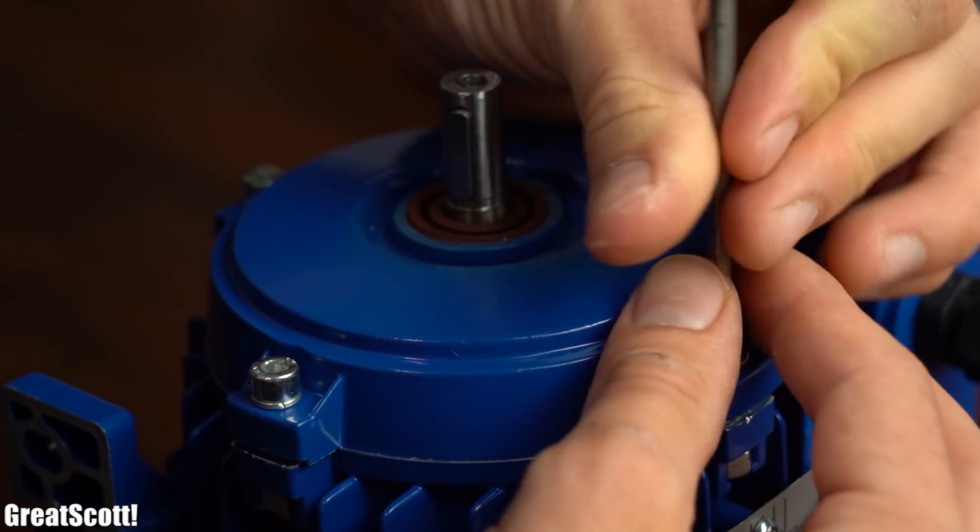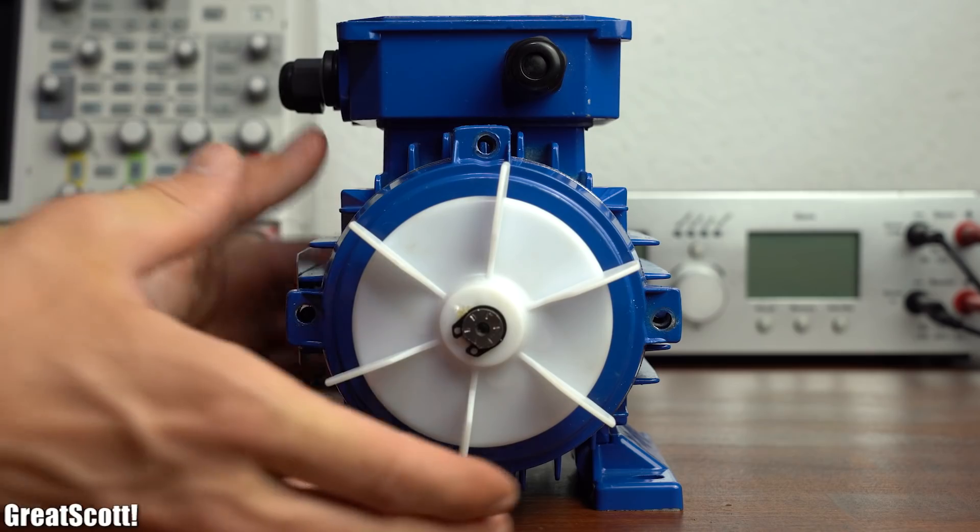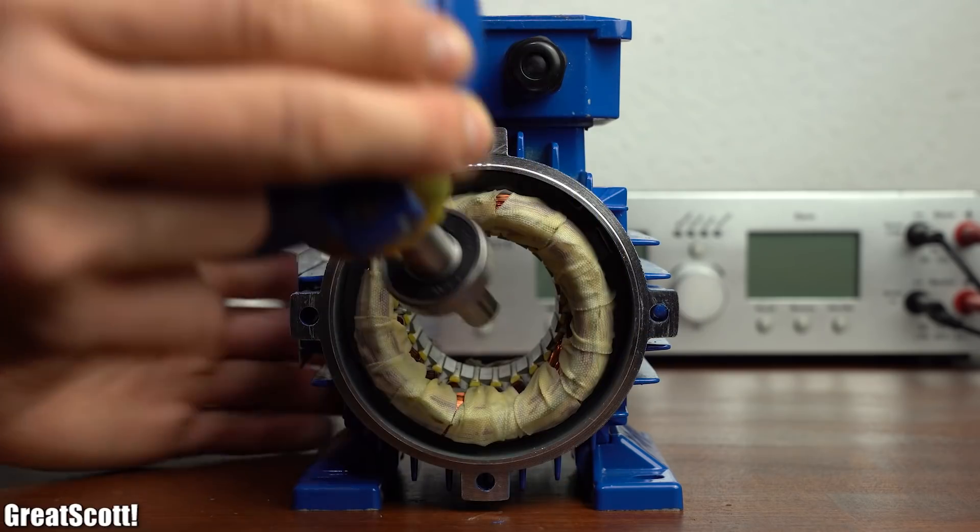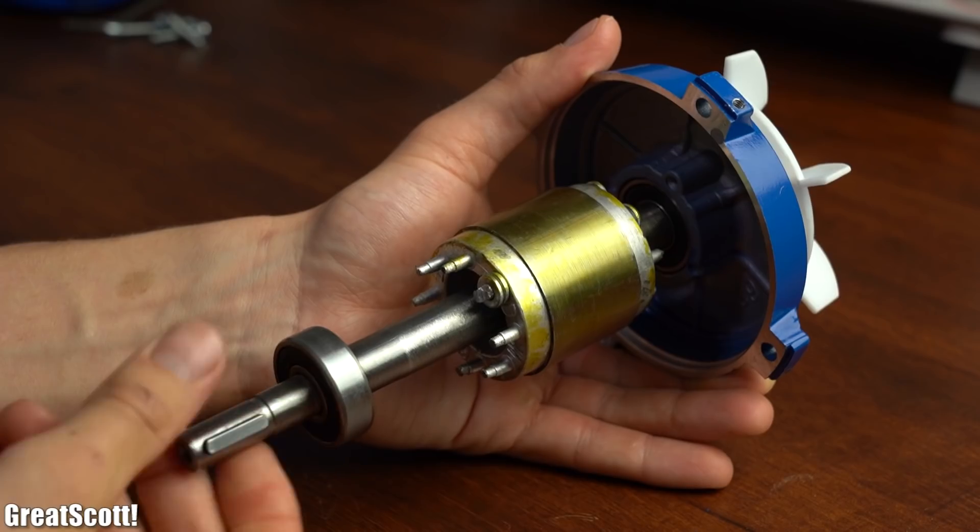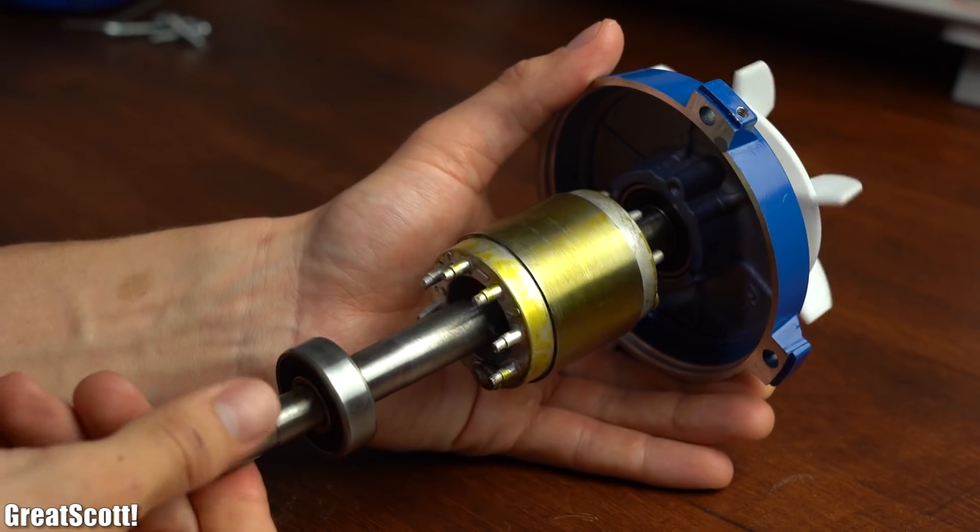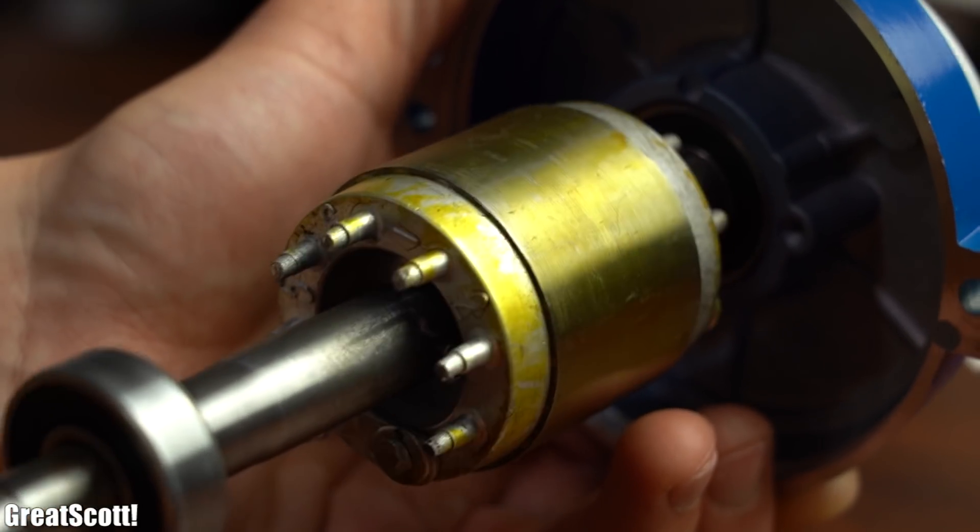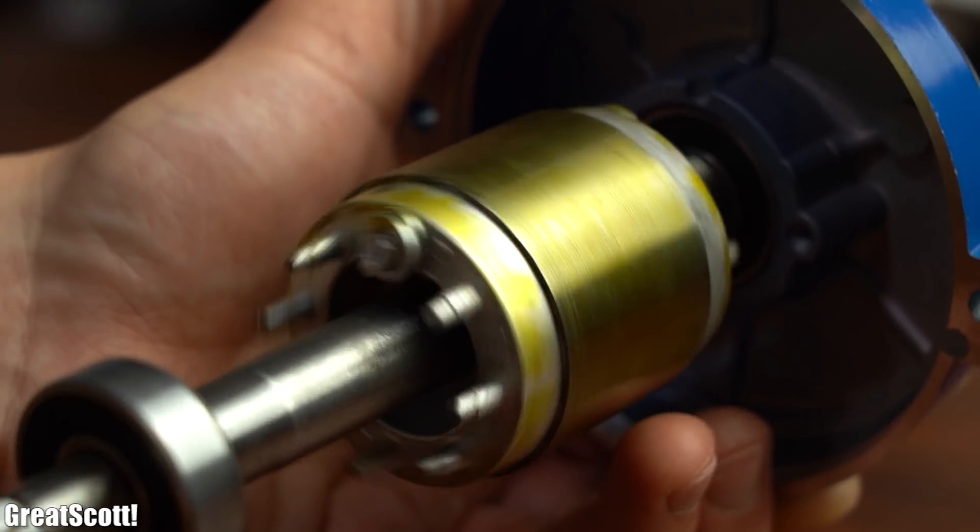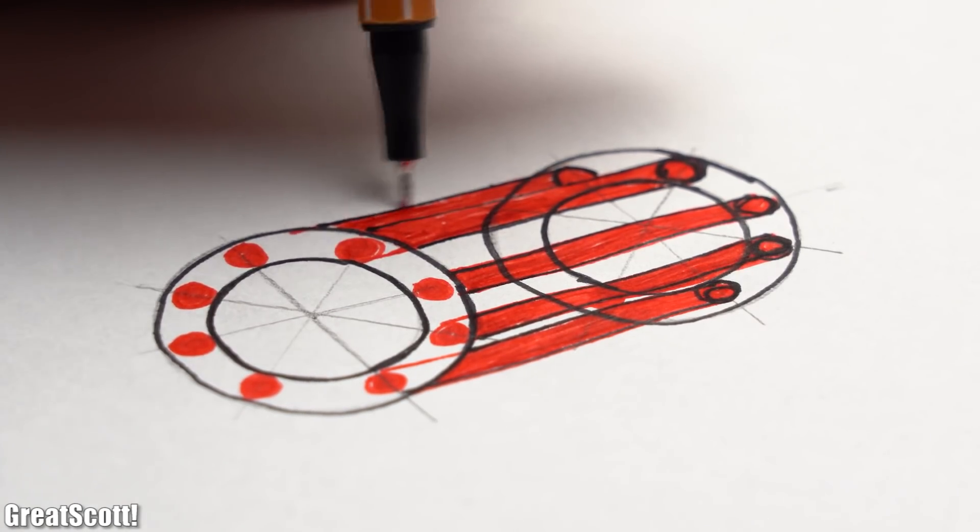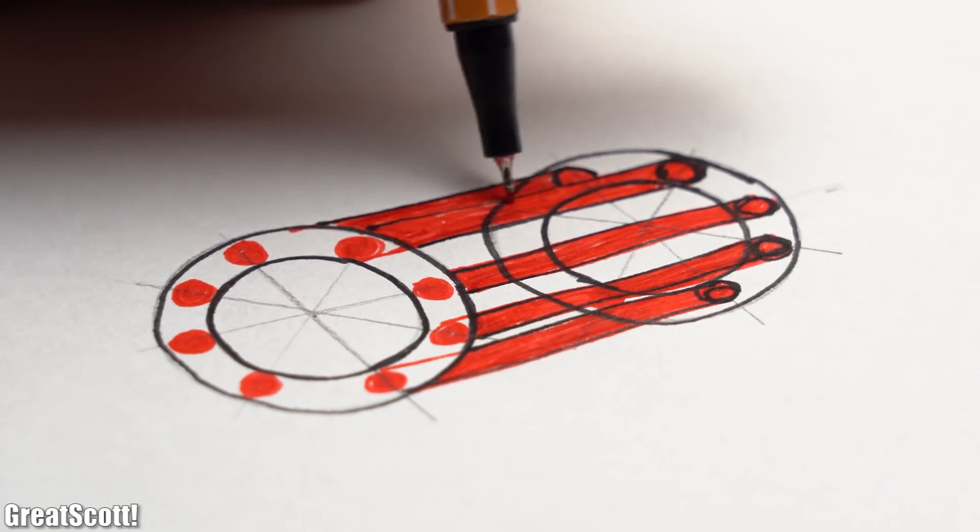So once again I removed all the screws and thankfully was quickly capable of removing the rotor from the system. Now the rotor is obviously the part of the motor that rotates and in this case it is made up of a squirrel cage. It basically consists of conductive metal sticks which are shorted to one another at each end.